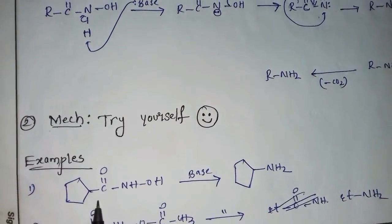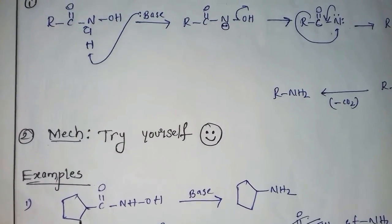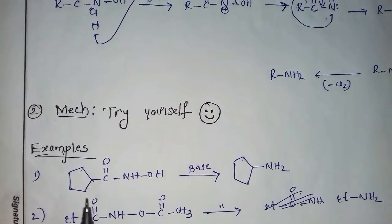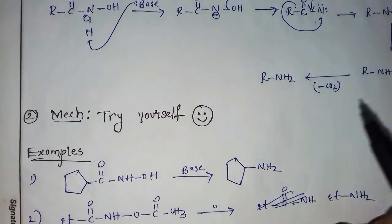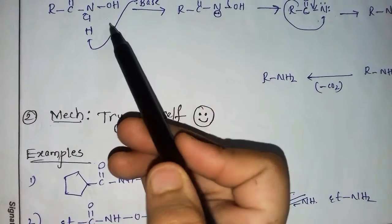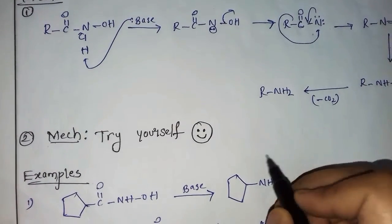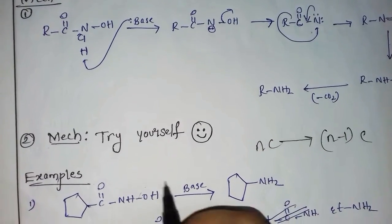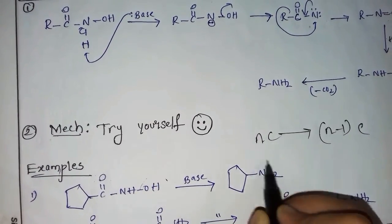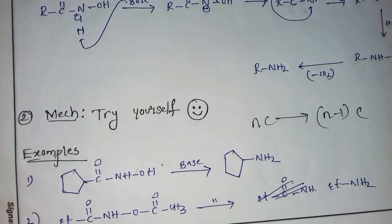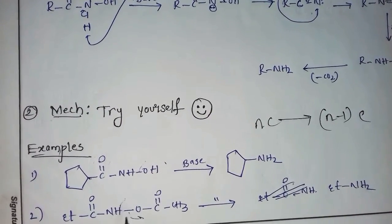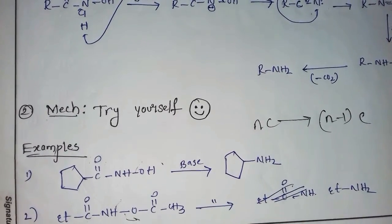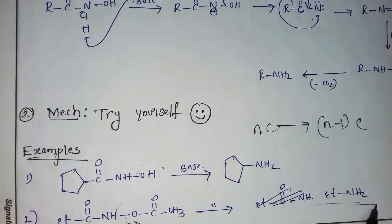Examples of Lossen rearrangement: for hydroxamic amide, remove this group with base — n to n-1 carbon rule again — abstraction of proton removes the leaving group as CO2, giving the primary amine. Similarly for the hydroxamic ester example, the same process gives the primary amine as the answer.